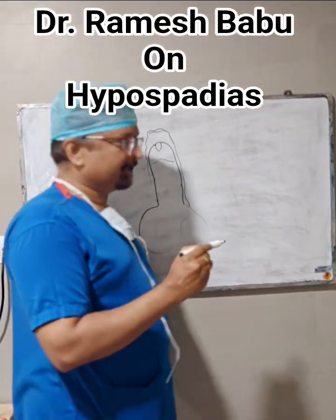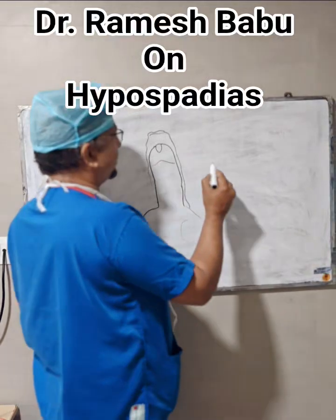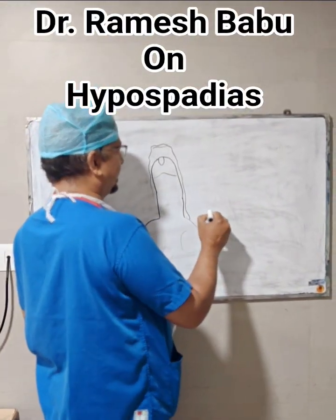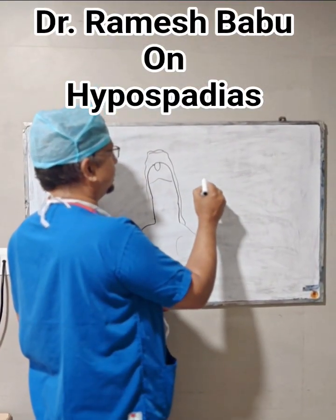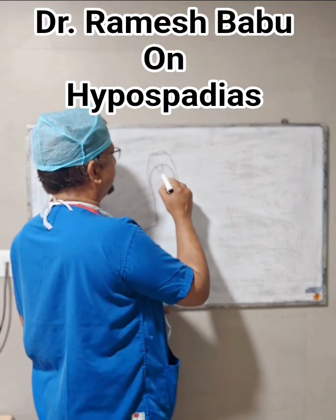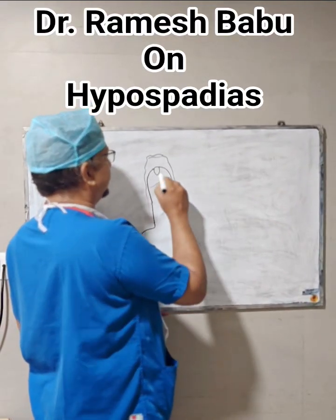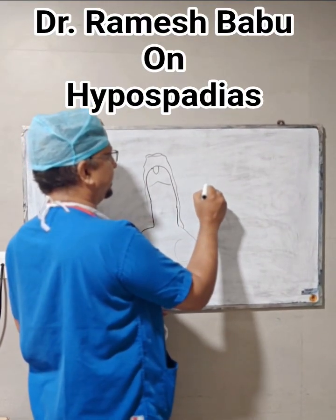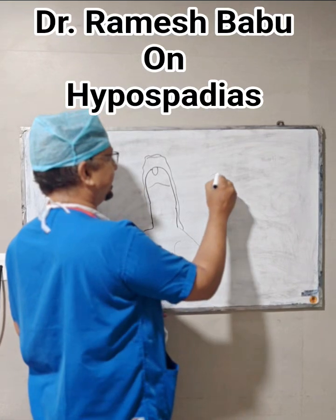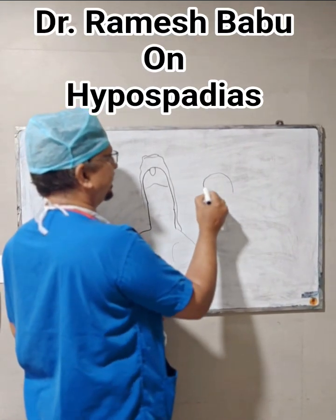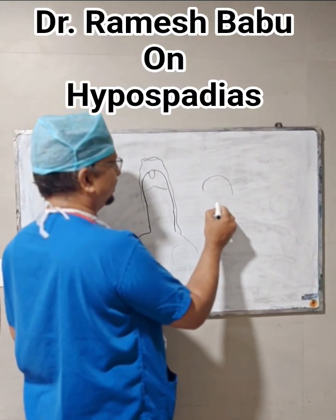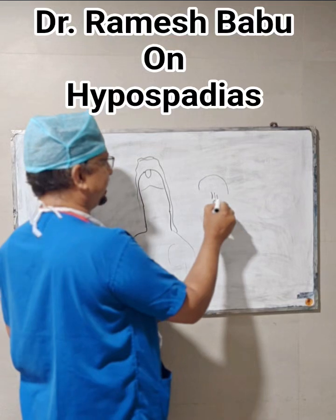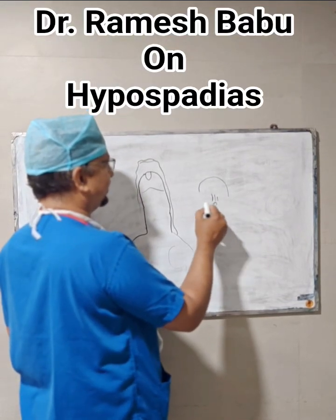In a patient with hypospadias, first, the skin is not complete. Second, the opening is not in the correct position — instead of being at the tip, it is located further down.